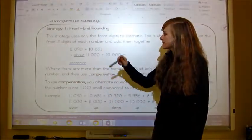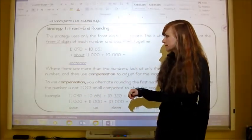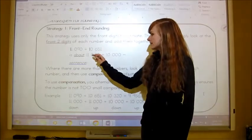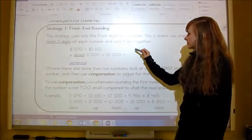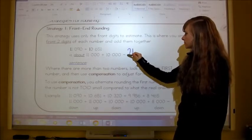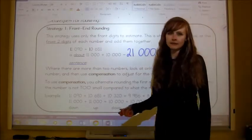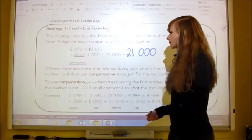Then we've got 10,651, and that just gets rounded to 10,000. And then we add 11,000 plus 10,000, and then we would get 21,000. But that's not the exact answer. That's just the about answer.